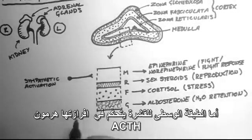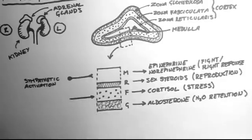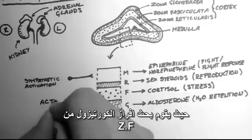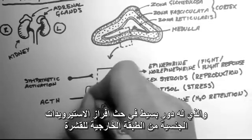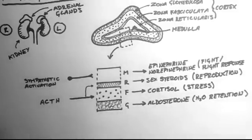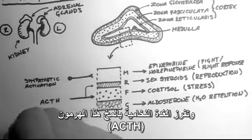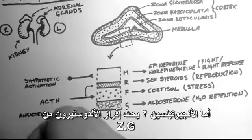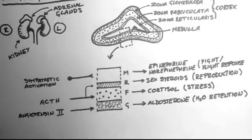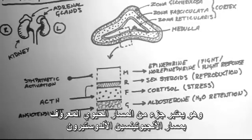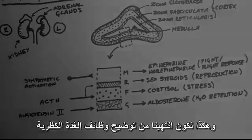ACTH, or adrenocorticotropic hormone, releases cortisol from the fasciculata, but it also has a minor effect on the reticularis in releasing sex steroids. ACTH is released from the pituitary. Angiotensin II causes the release of aldosterone, and it's part of the renin-angiotensin-aldosterone pathway. And that's an overview of the adrenal gland function.